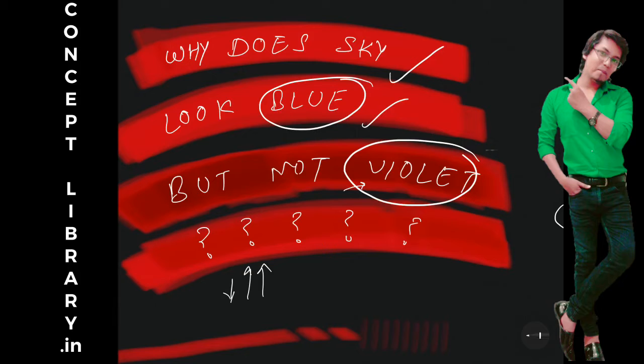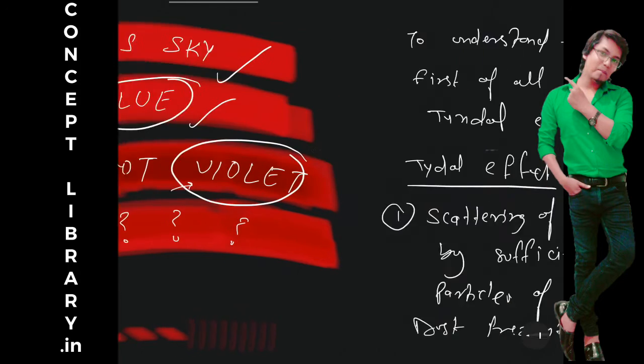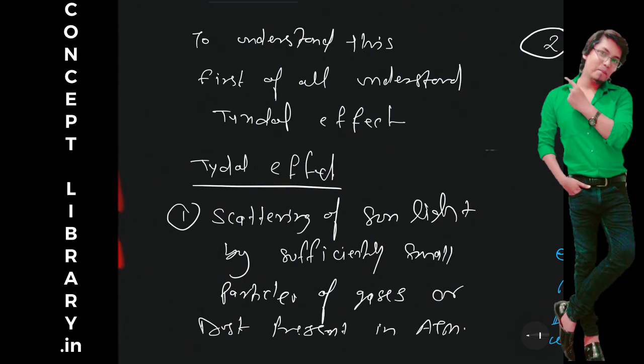So why? Okay, let's understand in a very easy way. First we'll understand Tyndall effect - what is Tyndall effect? So there is something called scattering of sunlight.